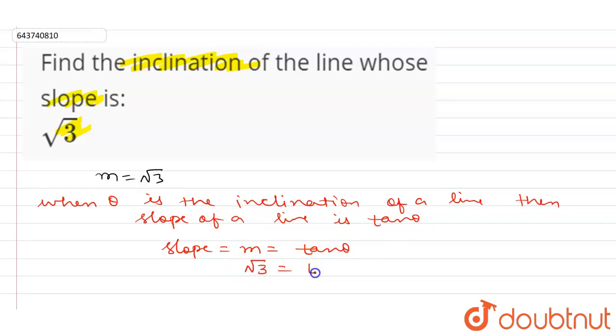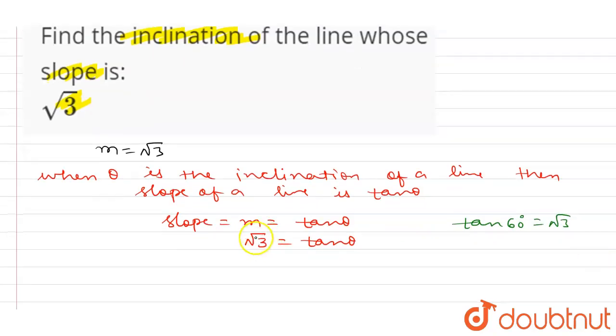So √3 is equals to tan θ. Okay, so we know that tan 60 degree is equals to √3. Okay, so I can write here tan 60 degree is equals to tan θ.